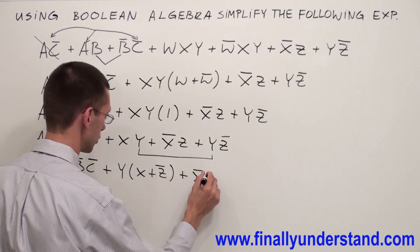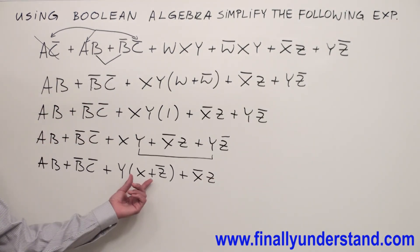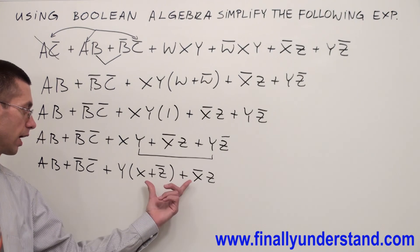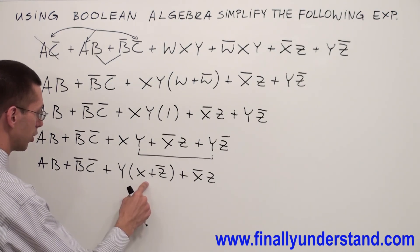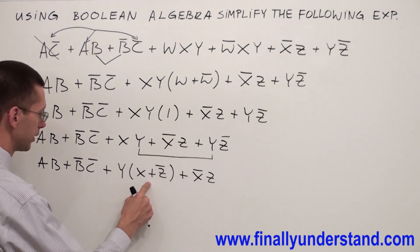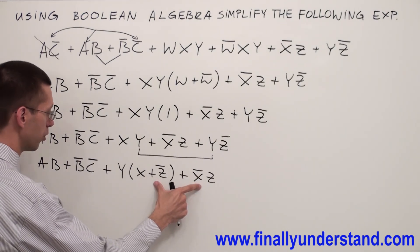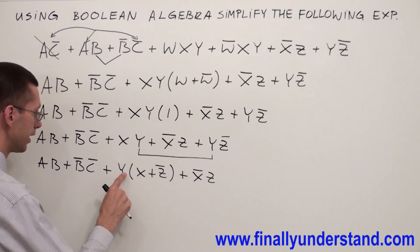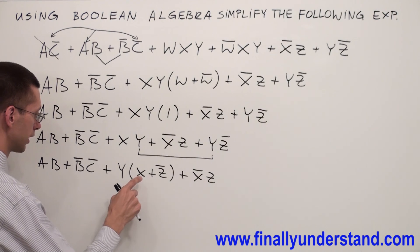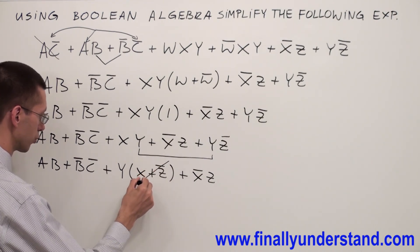Now as you can see, these two terms are complements. Right? So we can use over here the complement absorption theorem. Complement absorption theorem says one more time that anytime I have complements and one of them is anded with any other variable, that complement can be dropped out. That's why I am going to cross this one out.